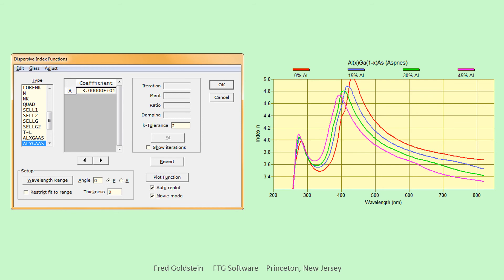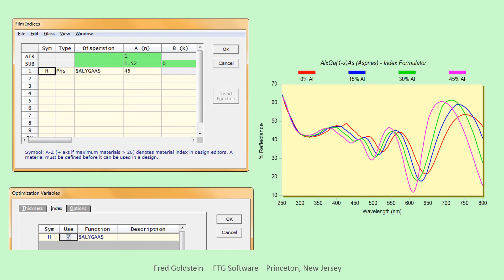Plotting N as a function of aluminum fraction X indicates that the equation works correctly. We next ensure that optical calculations also work correctly.